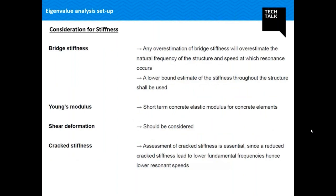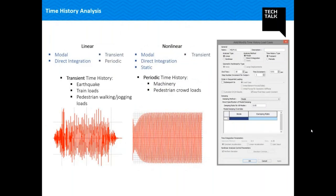Regarding stiffness, any overestimation of bridge stiffness will overestimate the natural frequency and the speed at which resonance occurs. Hence, a lower bound estimate of stiffness throughout the structure should be used. Assessment of cracked stiffness is essential since reduced cracked stiffness leads to a lower fundamental frequency and hence a lower resonance speed. Once the load data and eigenvalue analysis data are set up, we can define the type of time history analysis to perform.